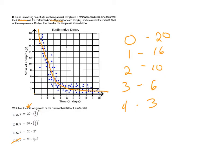I want to check: do the values cut in half each time, cut to a quarter each time, or double each time? They're decreasing, so they definitely don't times two. A quarter of 20 is 5 and half is 10 — the next value is closer to half. A quarter of 16 is 4 and half is 8 — 10 is closer to half. A quarter of 10 is 2.5 and half is 5 — 6 is closer to 5. And half of 6 is 3, which matches. So the closest fit is cutting in half each day, and my answer is A.